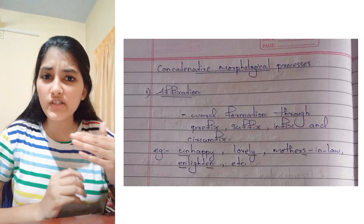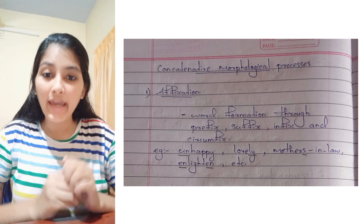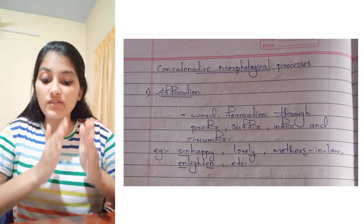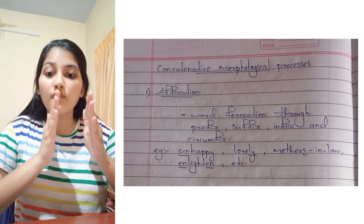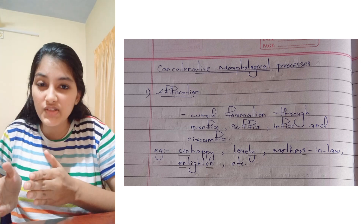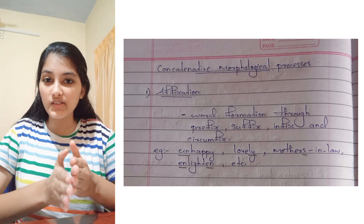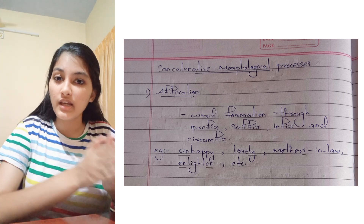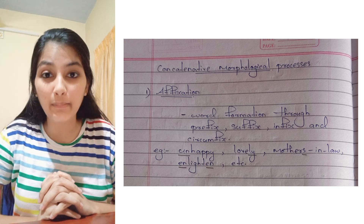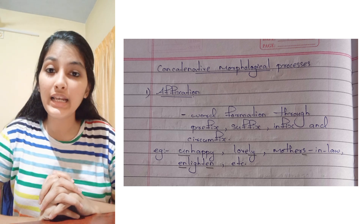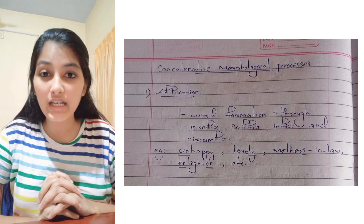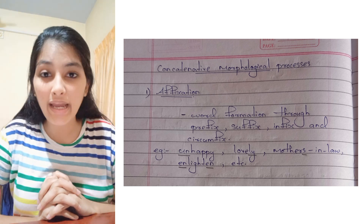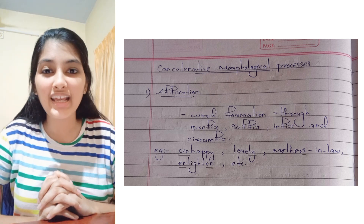Concatenative morphological processes: the first one is affixation. It is the process of word formation through prefix, suffix, infix, and circumfix. Examples: unhappy, lovely, mothers-in-law, enlightened, etc.